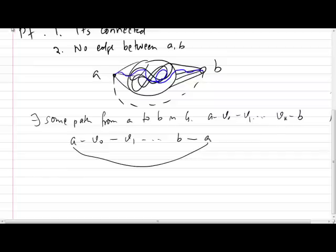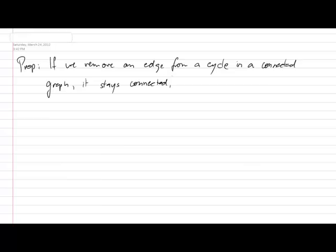But the interesting thing about this property, that if I add an edge to a connected graph I get a cycle, is that the converse actually holds true as well. And the converse looks something like this. So if we take a connected graph that has a cycle and we remove one edge from the cycle, it stays connected. And I'm not going to prove this. Actually, there's a proof of this in the book, and you can think about it yourself. It's the converse of the previous statement.